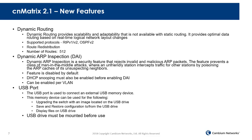Let's dive a little bit deeper into the new features. The first feature to highlight is dynamic routing. Dynamic routing provides scalability and adaptability that is not available with static routing. On CN Matrix, we will support both RIP v1 and v2 as well as OSPF v2, and we will support 512 or more routes.